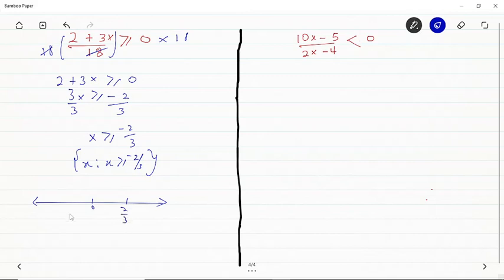And our number line for this will be 2/3 here and -2/3 here. Now if we look at the sign, the sign is greater than, so we look at where this pin is facing and that is where our number line arrow will face. So this is it for the first one.